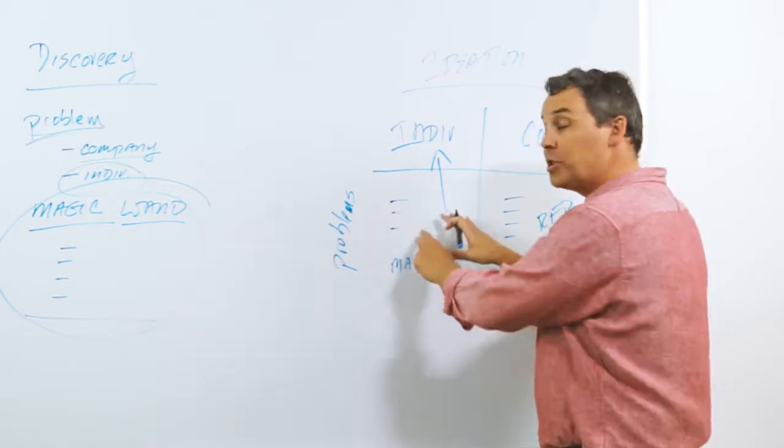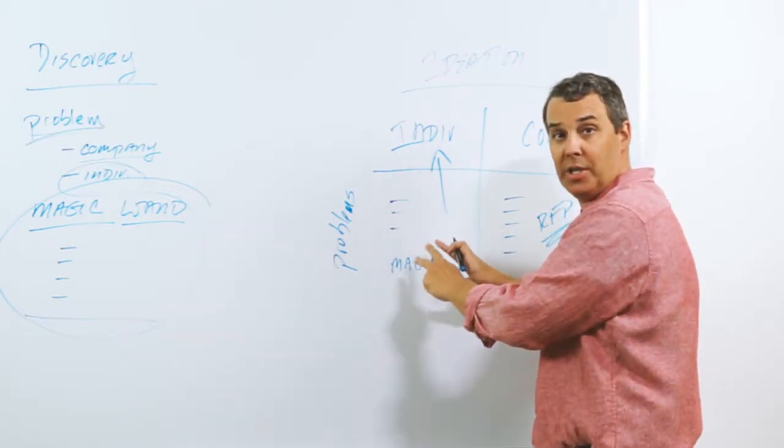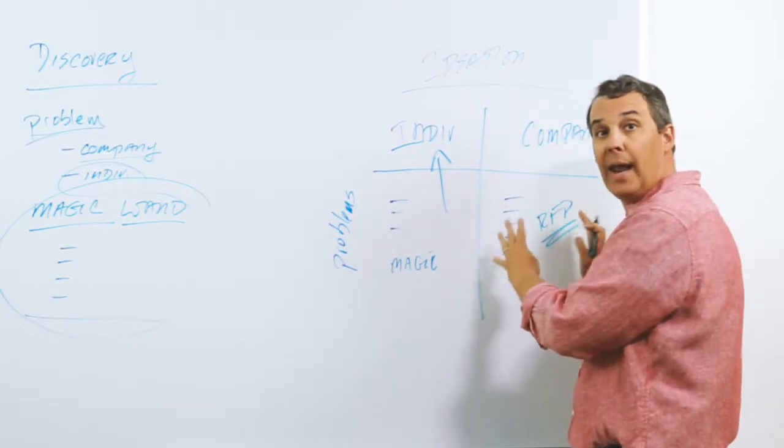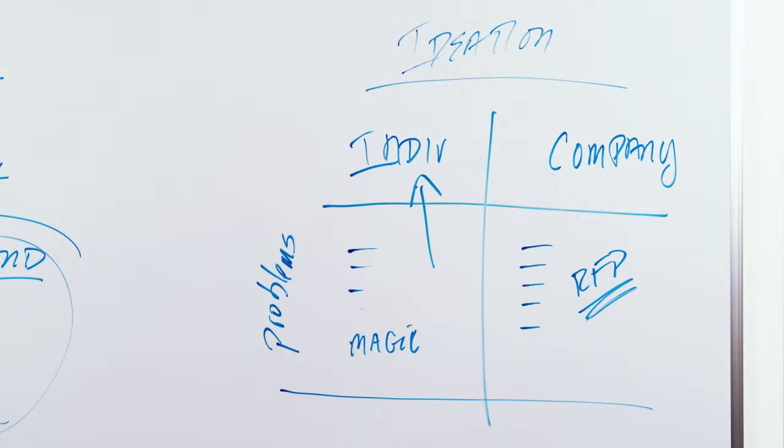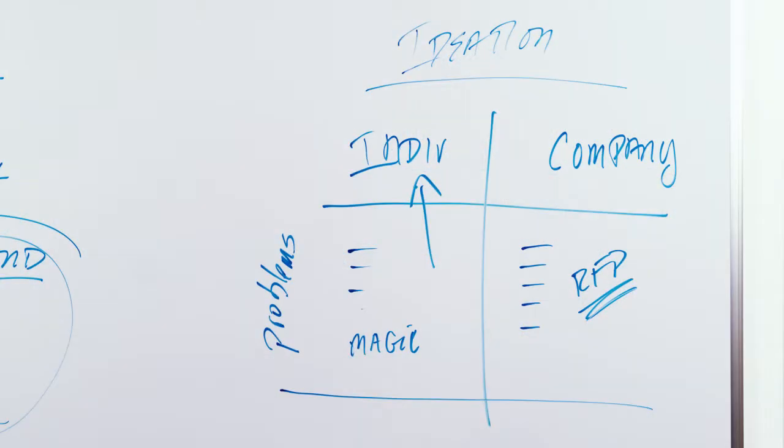This is blue ocean. Most of your competitors, they're not going to ask this question. They're going to live over here. They're only getting half the picture. That's why this discovery is so important. So I go into the room, I bring the team together, I get a big whiteboard, we start doing this and we make sure we list out all the problems.